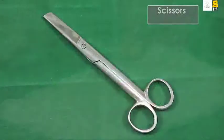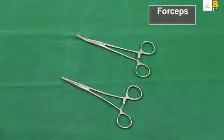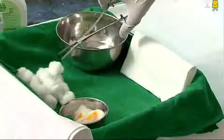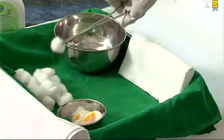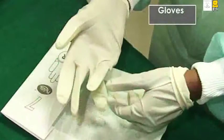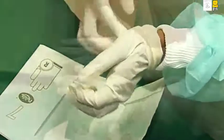Scissors are used to cut gauze or adhesive tape into strips. Forceps are used to remove objects like grit or slivers of glass that may be stuck in the wound, and are also used to hold pieces of gauze or small cotton swabs. Gloves are used to protect one's hands from infection from the wound.